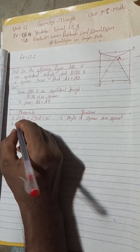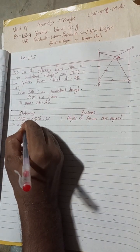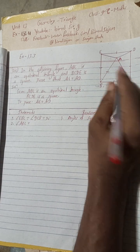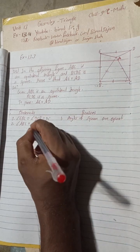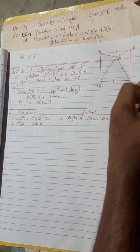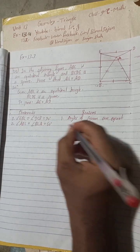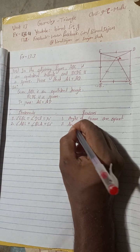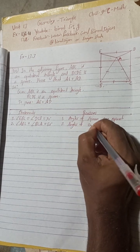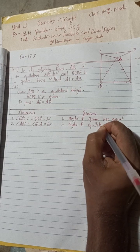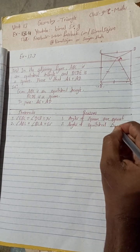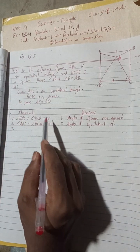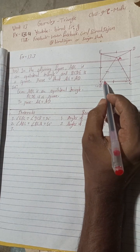Number two: Angle ABC is equal to angle BCA — both are 60 degrees. Reason: angles of an equilateral triangle are equal, each being 60 degrees.